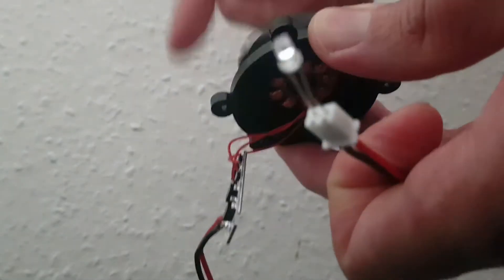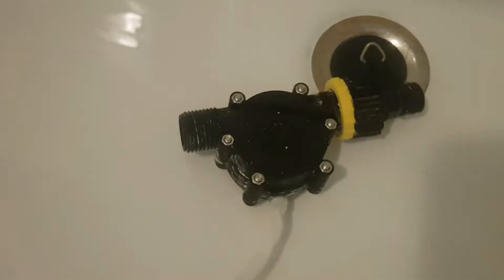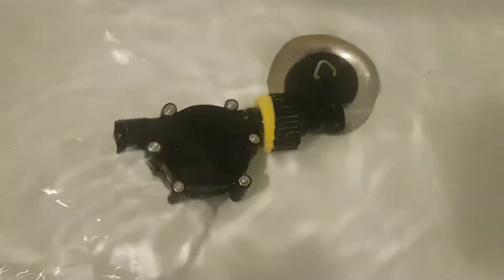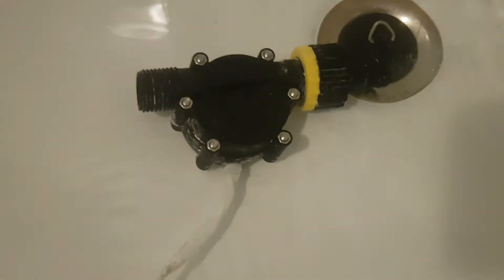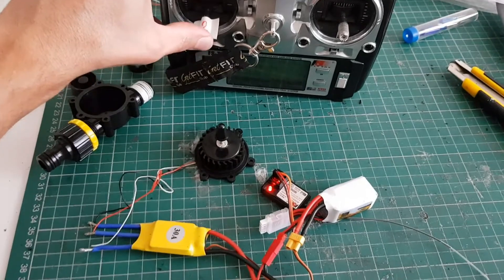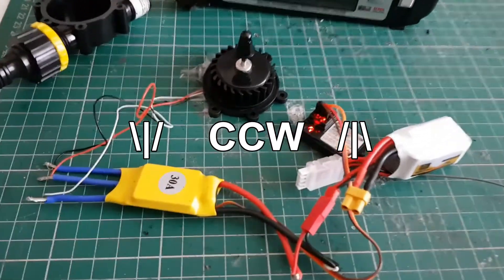A turbine absorbs energy from a fluid stream and converts it to work, while a pump absorbs useful energy and converts it to kinetic energy and gives it to a fluid stream. In short, a pump increases the energy of the fluid stream, whereas a turbine decreases the energy.